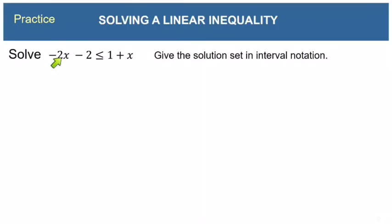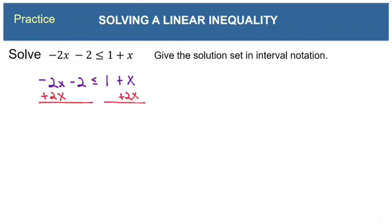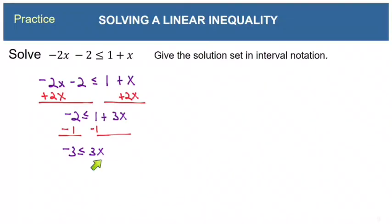We have negative 2x minus 2 is less than or equal to 1 plus x. Identify the smaller x term and eliminate it first — add 2x to both sides. That gives negative 2 is less than or equal to 1 plus 3x. Subtract 1 from both sides: negative 3 is less than or equal to 3x. Divide both sides by positive 3 — no need to flip the symbol.